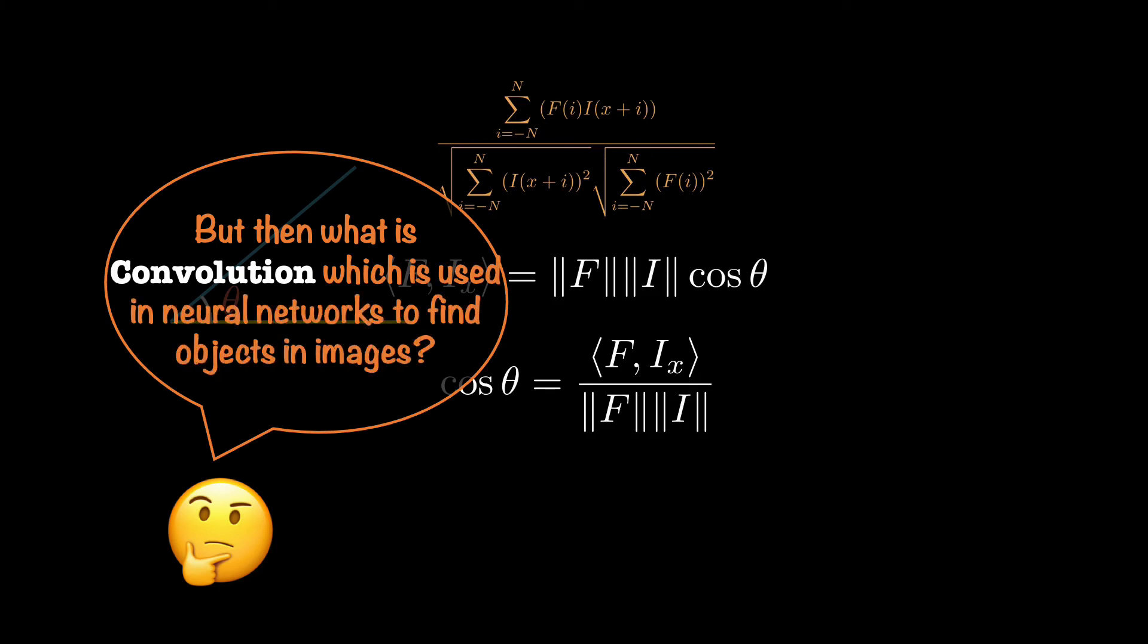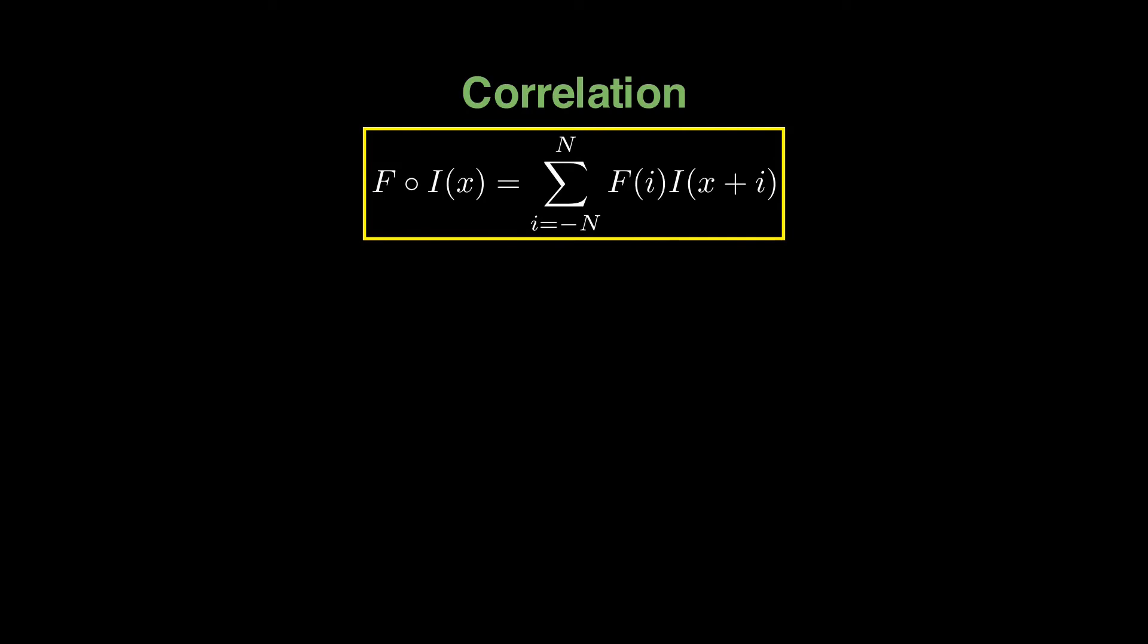Now, another term that is used generally when we talk about finding objects in images is called convolution. So is there a connection to all this here? Let's talk about it then briefly. Here we have a correlation or a cross-correlation mathematical formulation. You should be familiar with this by now. And if not, then make sure you check my tutorial called making the correlation machine on my channel.